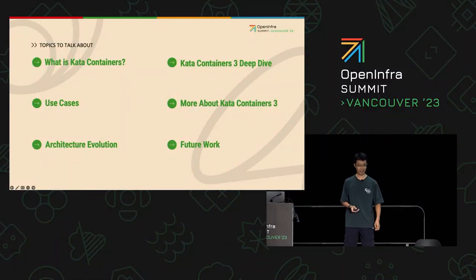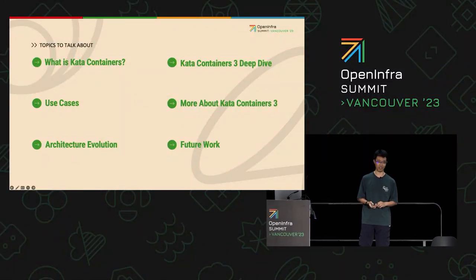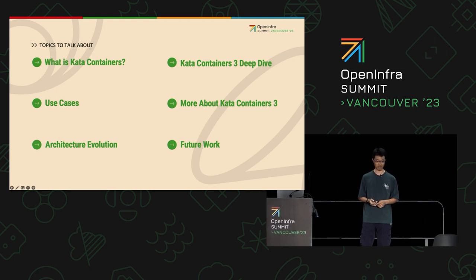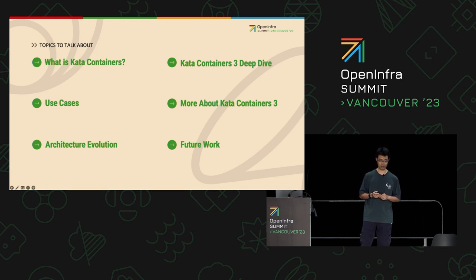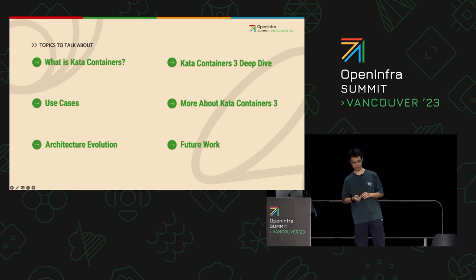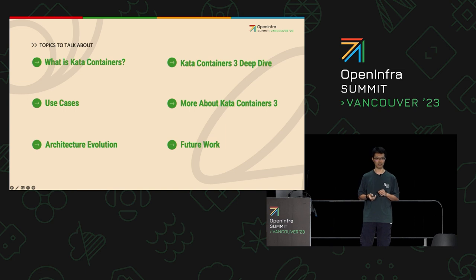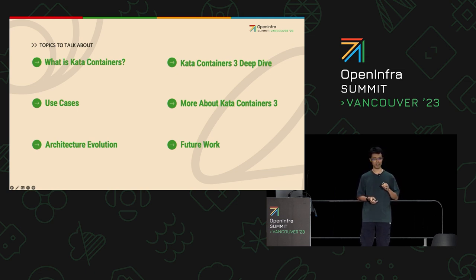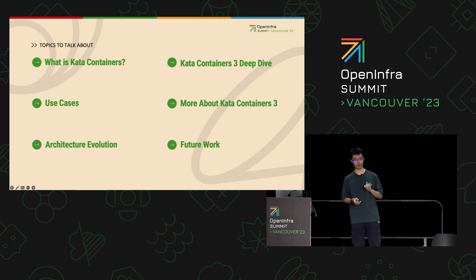So the agenda: first I want to talk about what Kata Containers is and its use cases. Because the project has been evolving for more than five years, I will introduce our architecture evolution over these years. Then I will move on to Kata Containers 3 development, explain what we have mainly done in this timeframe, and also cover confidential containers — important features worth mentioning. And we'll move on to some future work.